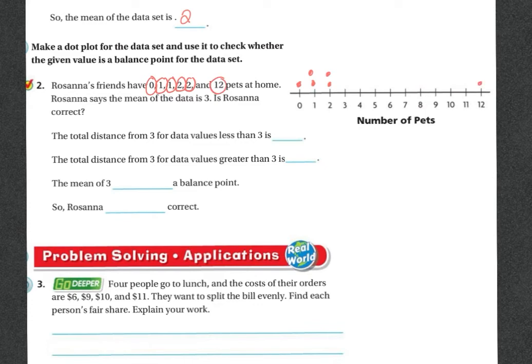So the total distance from 3 for the data values less than 3 is 9, and the total distance from 3 for the data values greater than 3 is also 9. So we're looking at the distance here. So the mean of 3 is the balance point.